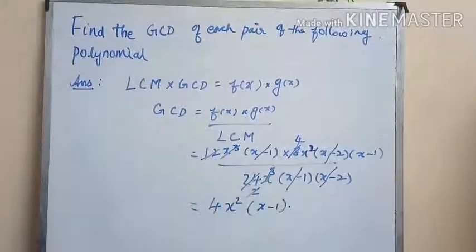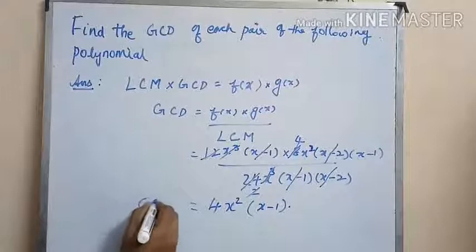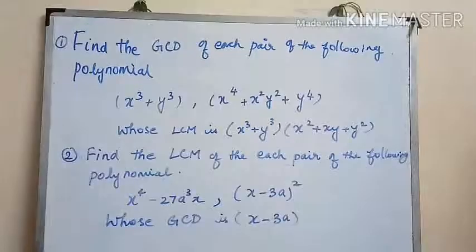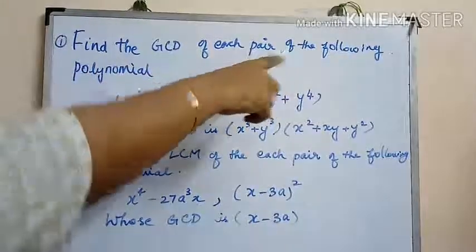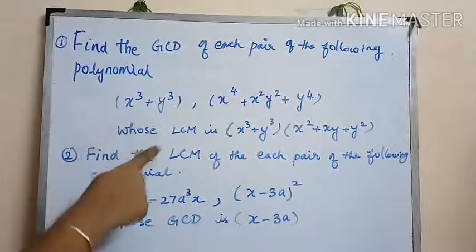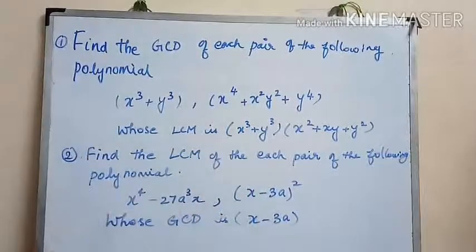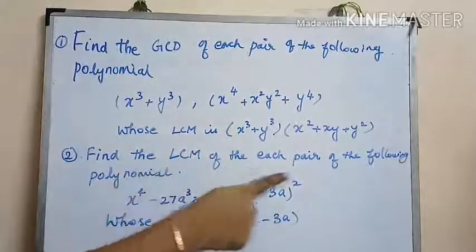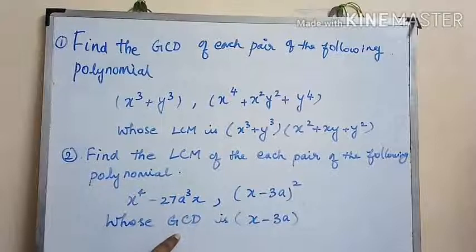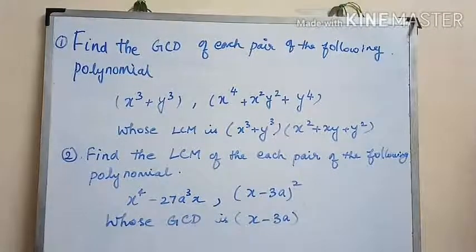This is our GCD for the given polynomials. That's all for today's session. Here we have two problems for homework — try them out: find the GCD of the given pair of polynomials whose LCM is given, and find the LCM of each pair of polynomials whose GCD is given. Hope the session was interesting. Thank you.